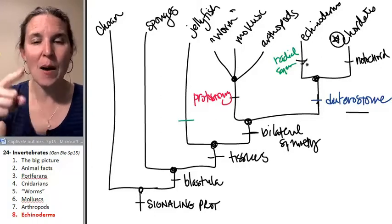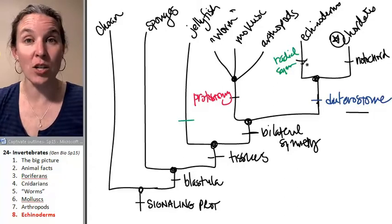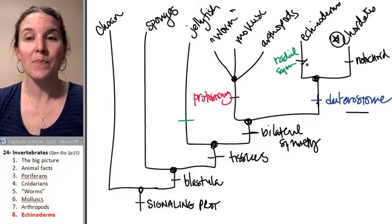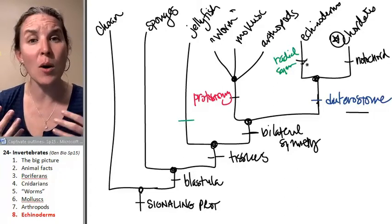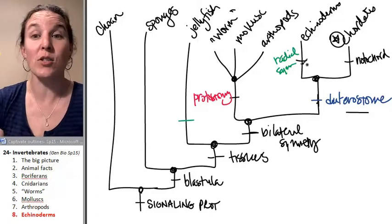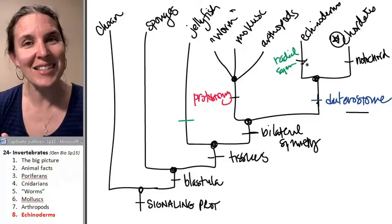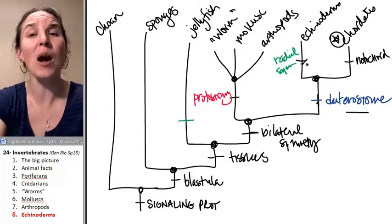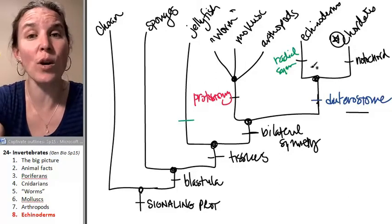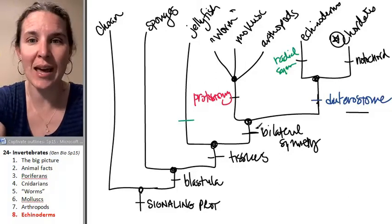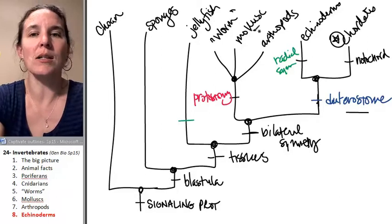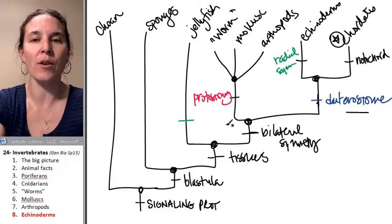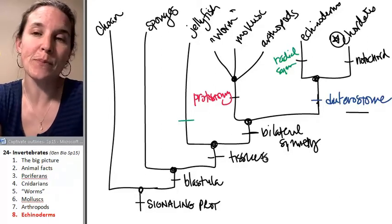But knowing about their embryology, knowing about their development and other characteristics of complexity and organ structure, that tells us that no, echinoderms probably are more closely related to chordates than they are to mollusks and arthropods and other protostomes.